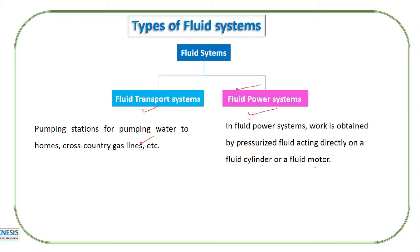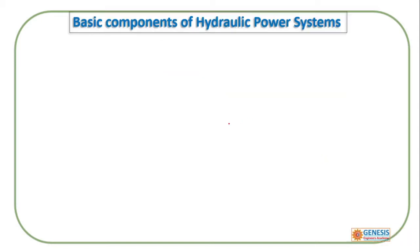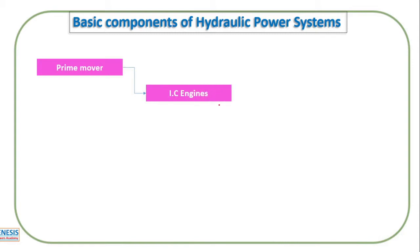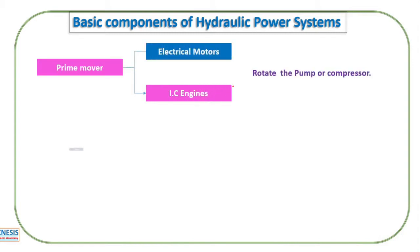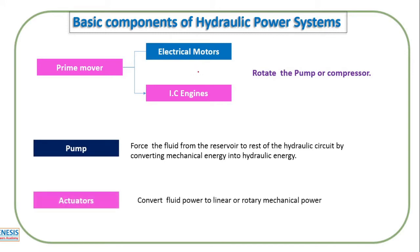The basic components of hydraulic power systems: first is the prime mover — the thing which moves other parts. For this we sometimes provide an electrical motor for in-house applications and IC engines (internal combustion engines) for outside applications. These are used to rotate the pump in the case of hydraulic systems, or the compressor in the case of pneumatic systems. If air is used, the system is called pneumatic; if oil is used, it is called hydraulic.